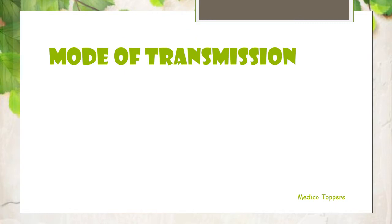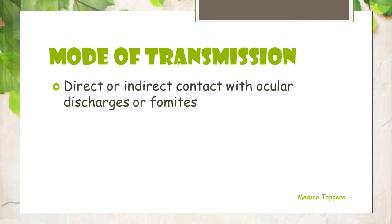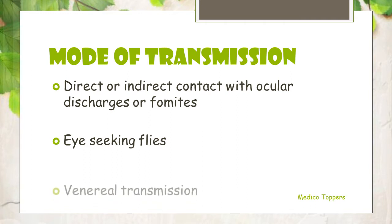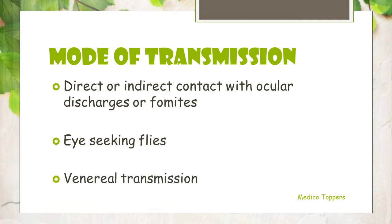Regarding the mode of transmission: first, direct or indirect contact with the ocular discharges or fomites. Fomites are nothing but the clothes or the places where the discharge is in contact with. Then, eye-seeking flies — there are a lot of flies which come around the eyes and that is one cause of transmission. And then venereal transmission, as we had seen in the causation itself: some Chlamydia trachomatis transmits sexually.